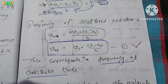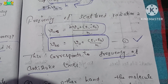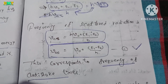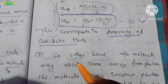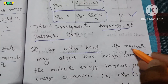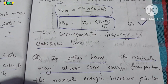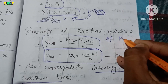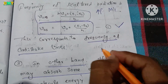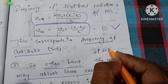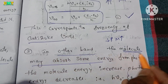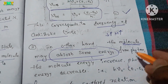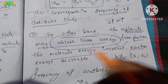Now let's do the second case — the Stokes case. On the other hand, the molecule may absorb some energy from the photon. In this case the photon energy is weak, so the photon energy will decrease.